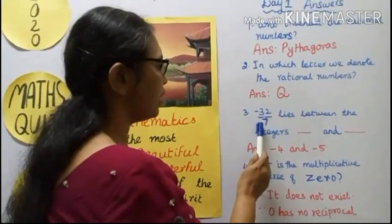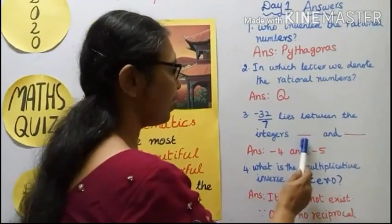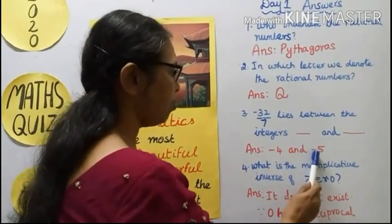Third question: Minus 32 by 7 lies between the integers dash and dash. Answer: Minus 4 and minus 5.